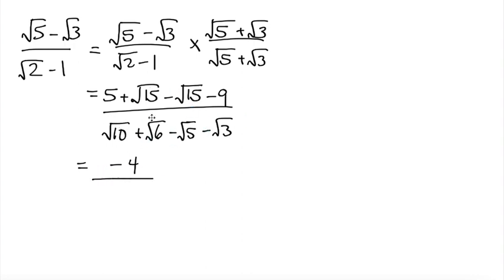Instead of writing it as root 10 plus root 6 minus root 5 minus root 3, I'm just going to write my denominator as the multiplication of the binomials: root 2 minus 1 times root 5 plus root 3.